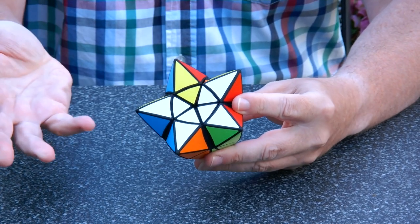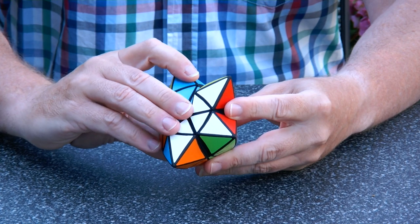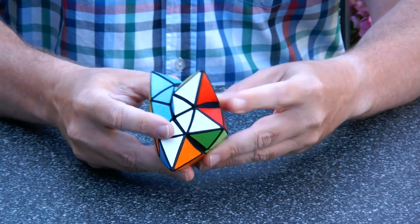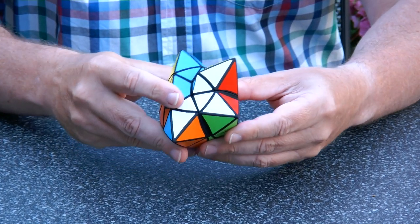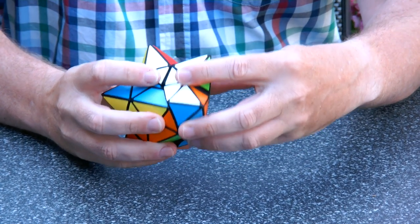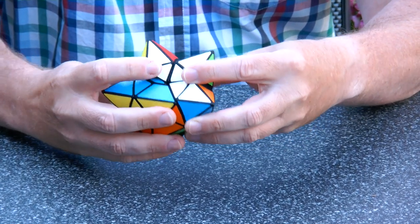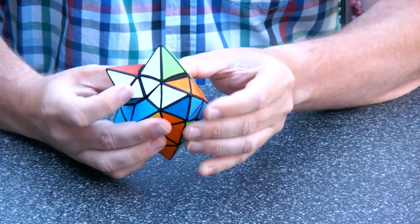So we can go from the rocket shape to the left handed shape. From the left handed shape we can go to the right handed shape. For instance, like by turning this way.